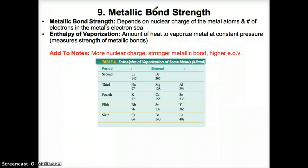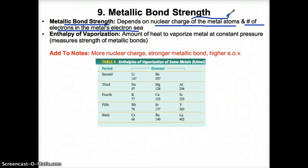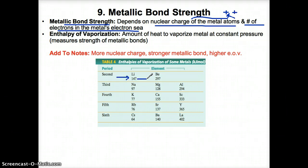Now let's discuss how to compare the strengths of different metallic bonds. The strength of a metallic bond depends on the nuclear charge of the metal atoms, as well as the number of electrons in the metal's electron sea. The nuclear charge relates to the number of protons in the metal atom. Across a period, the more protons — or the greater the nuclear charge — the stronger the metallic bond is.